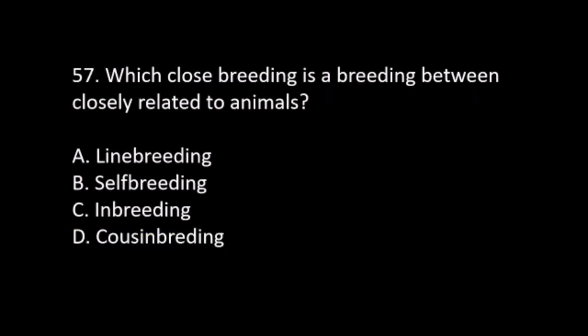Number 57. Which close breeding is a breeding between closely related animals? A. Line breeding. B. Self breeding. C. Inbreeding. D. Cousin breeding. The answer is C. Inbreeding.